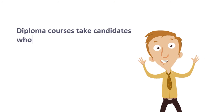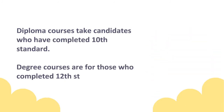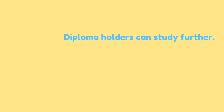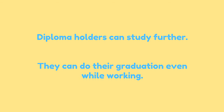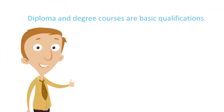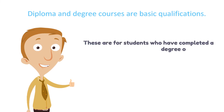Diploma courses take candidates who have completed 10th standard. Degree courses are for those who completed 12th standard. Diploma holders can study further and do their graduation even while working. Diploma and degree courses are basic qualifications for students who have completed a degree or diploma.